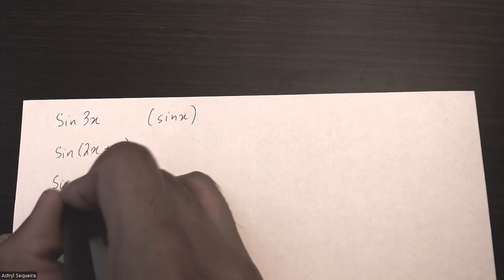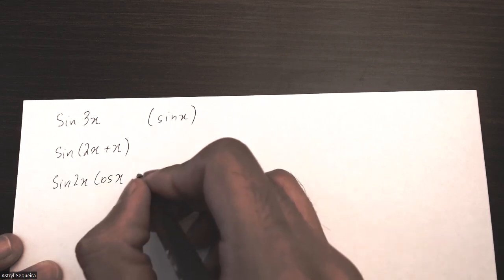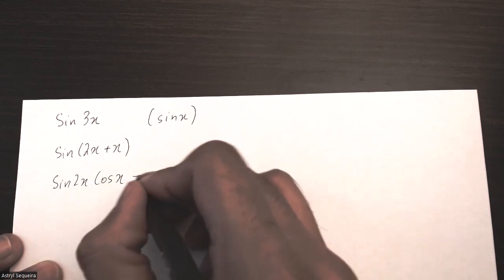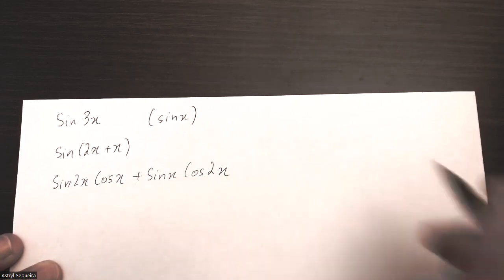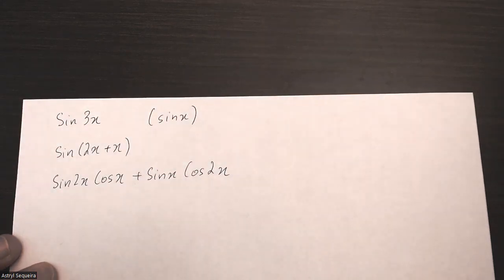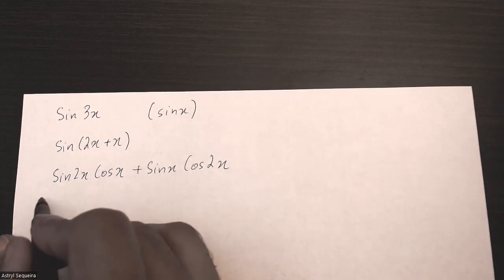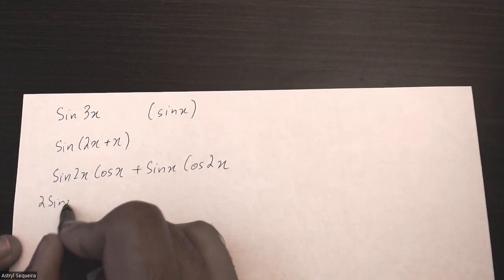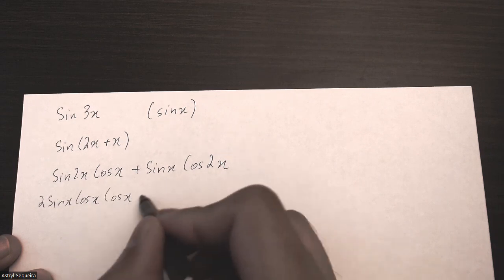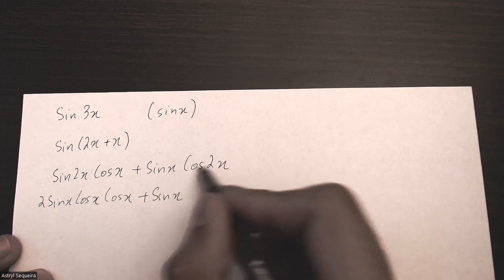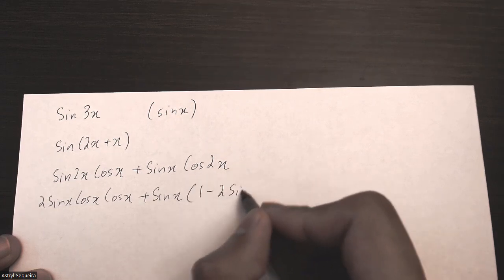So this is just going to be sine 2x cos x plus sine x cos 2x. I can split sine 2x using my double angle formula into 2 sine x cos x, and then I have another cos x over here. And I want to split cos 2x into 1 minus 2 sine squared x.